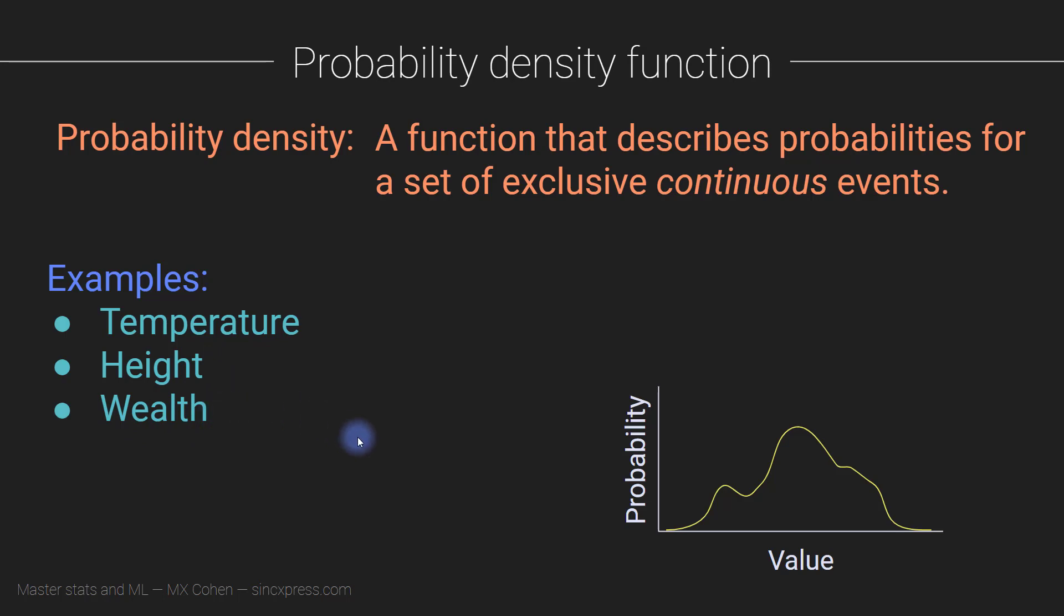So in the previous slide, I explained that probability mass functions, probabilities of discrete events or categorical events, they get drawn in bar charts or histograms. Now probability densities, those are actually drawn with smooth lines, because temperature can be kind of infinitely divided up.